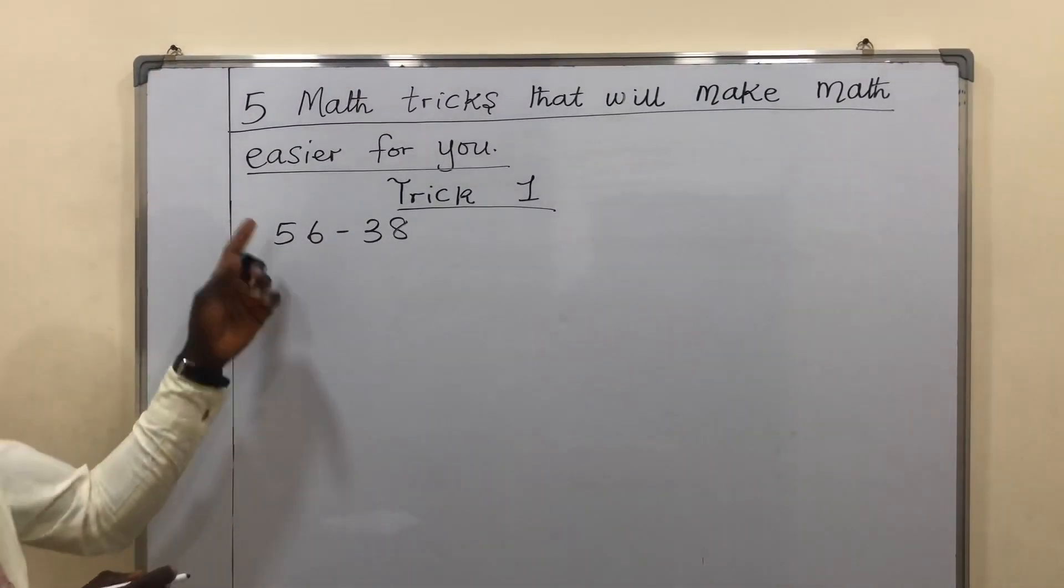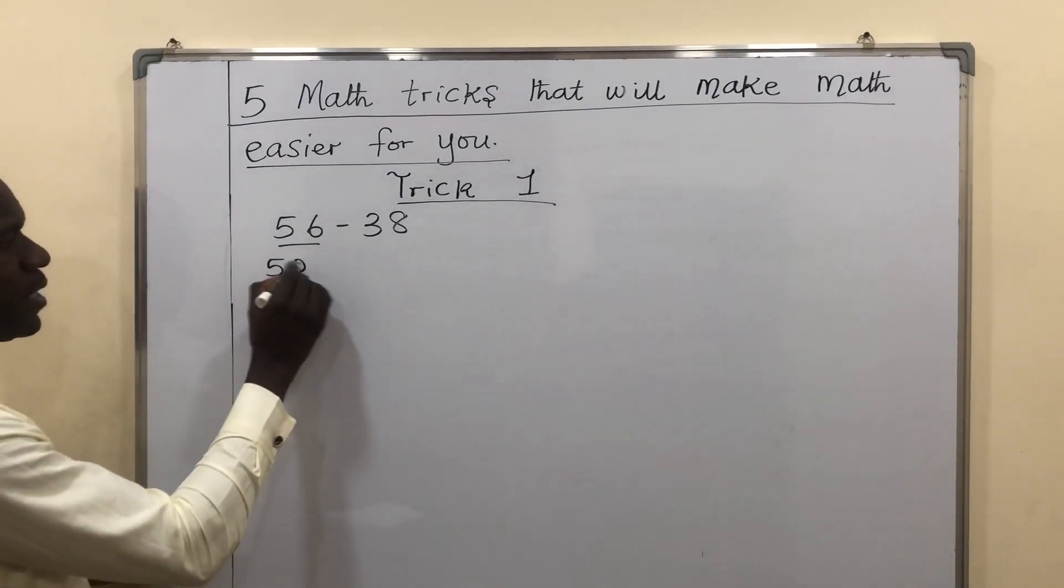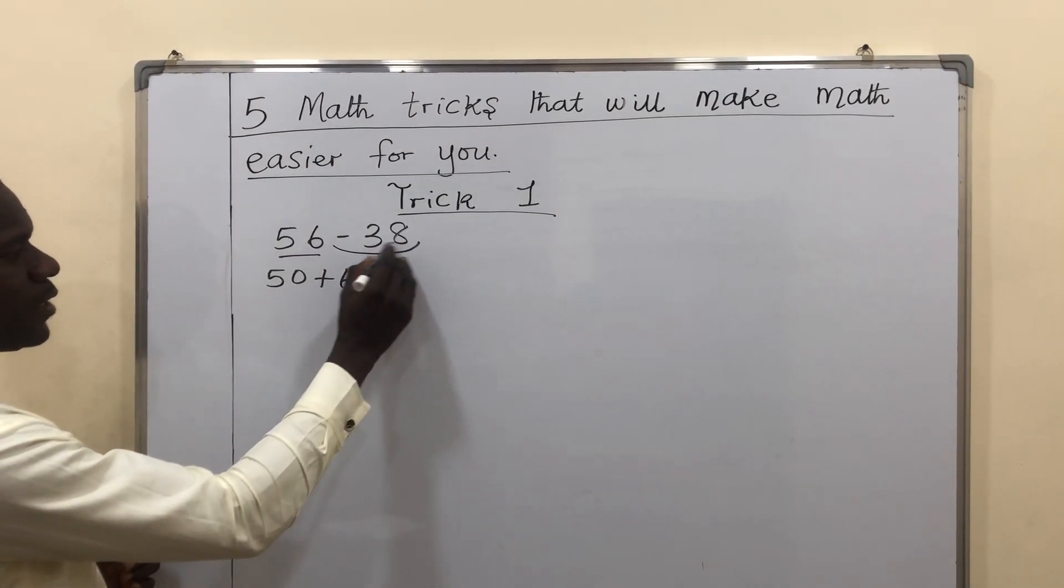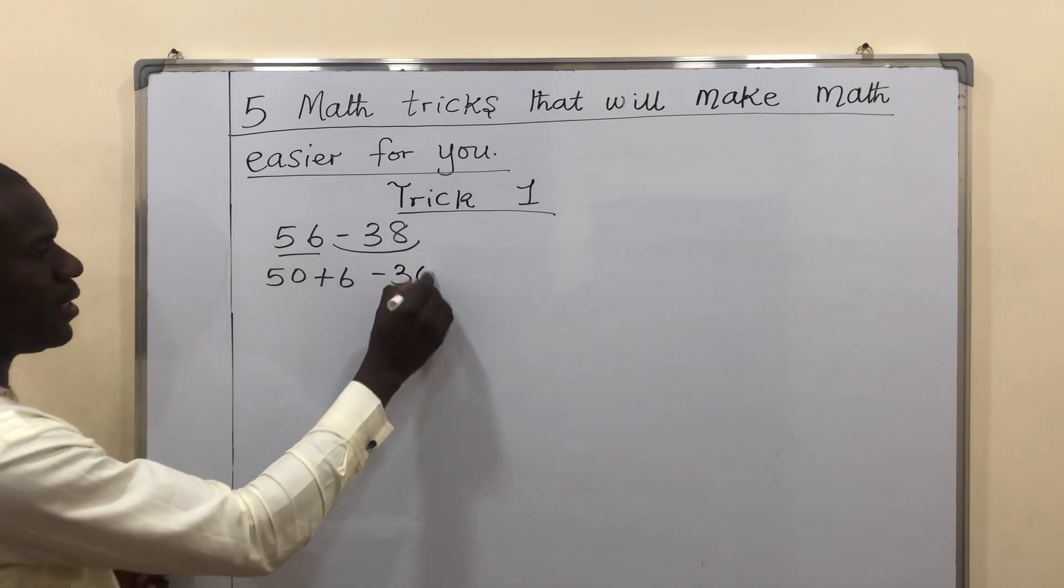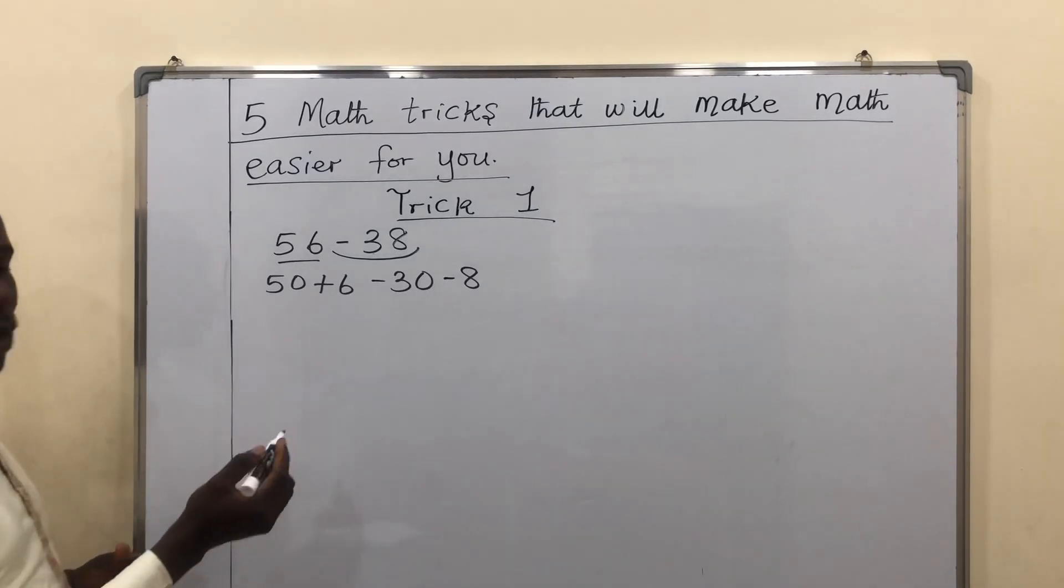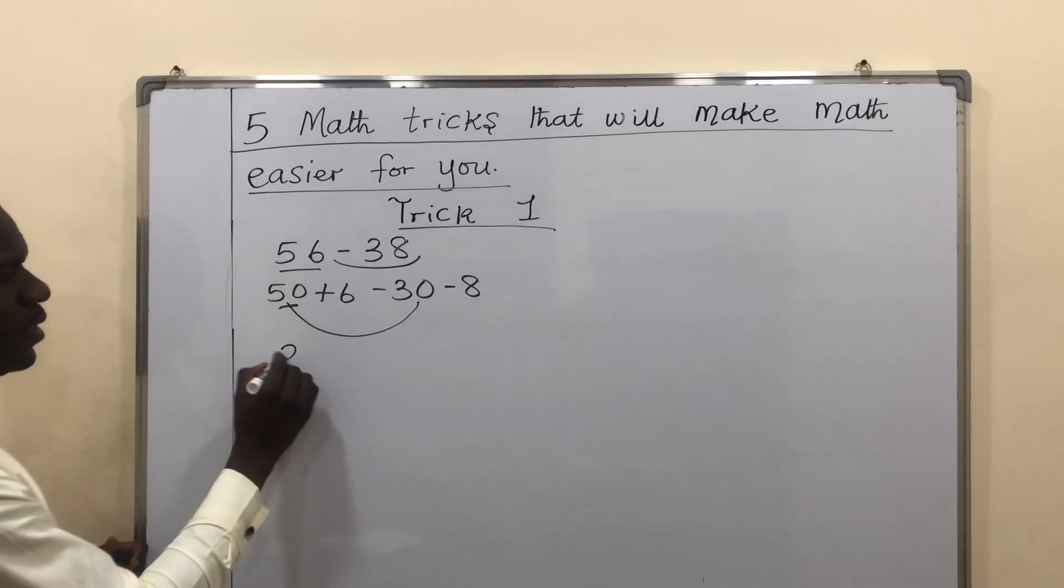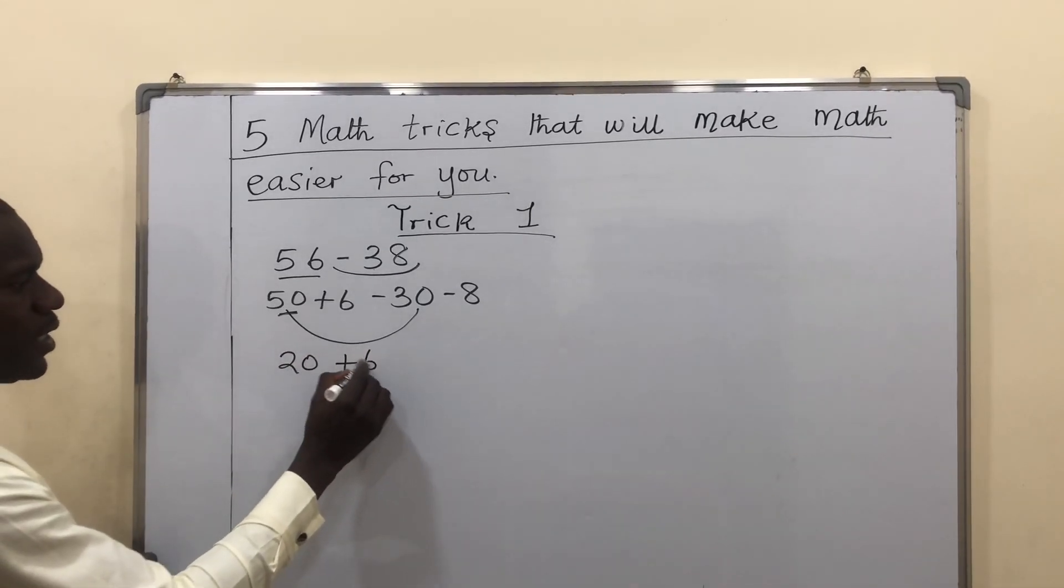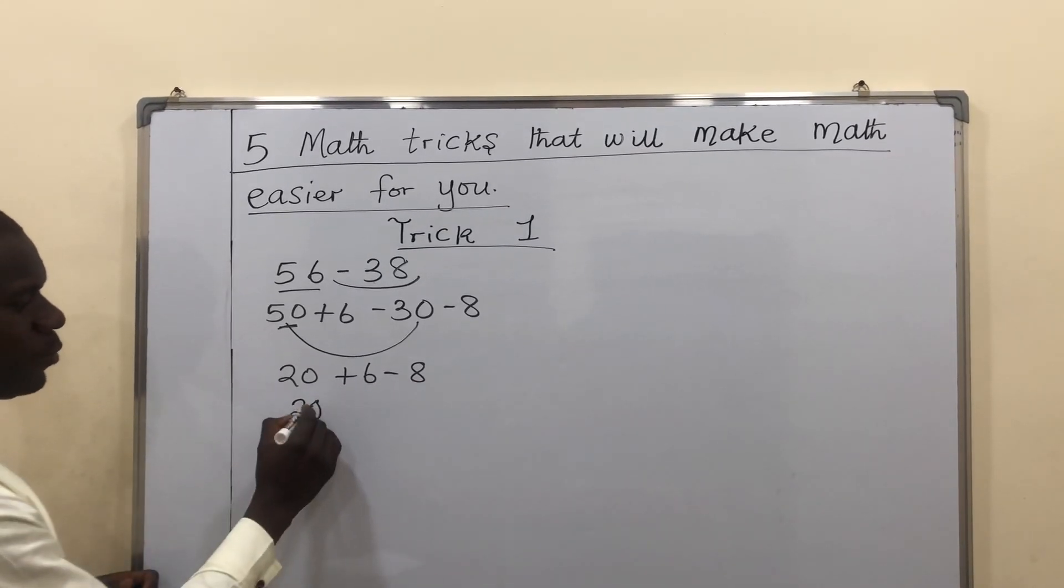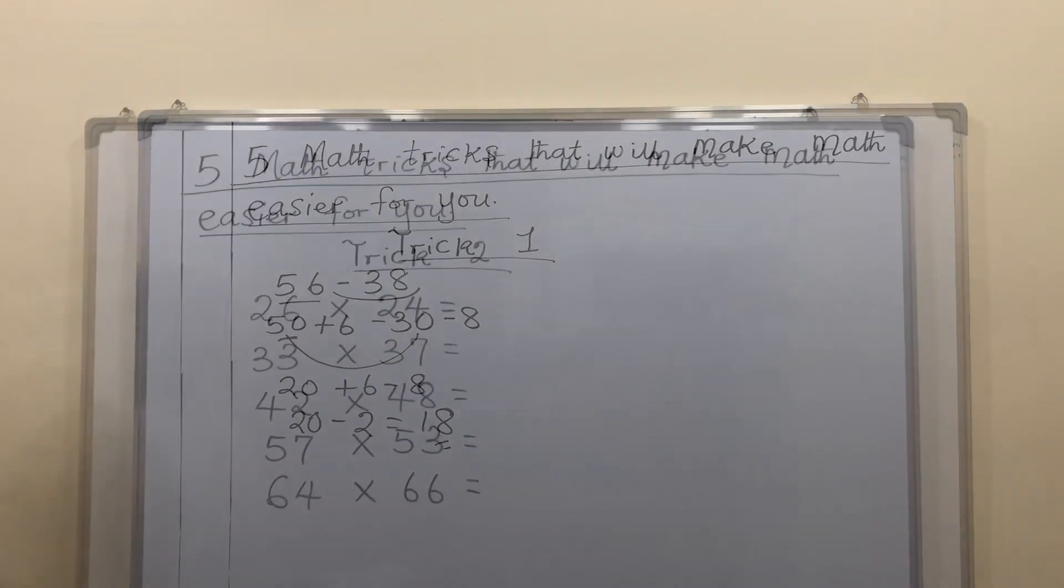What if you have a subtraction problem like 56 minus 38? We are going to do the same thing we did earlier. So we are going to expand 56, which will give me 50 plus 6 is 56. Now, this minus affects both digits. If you expand this, you have minus 30 and this will be minus 8 because the negative affects both of them. 50 minus 30 will give me 20 plus 6 minus 8. 20 plus 6 minus 8 will give me minus 2. 20 minus 2 will give me 18.